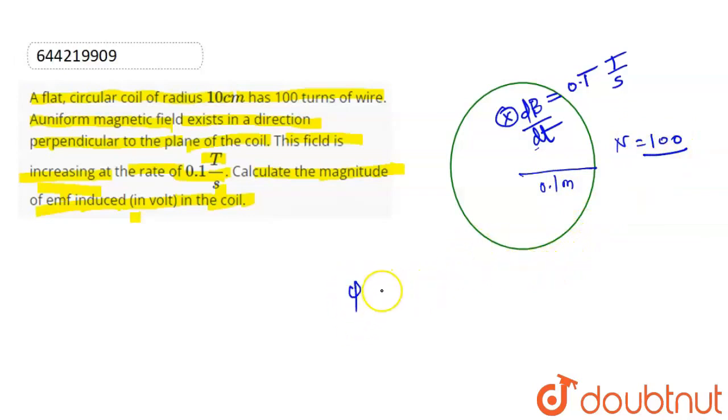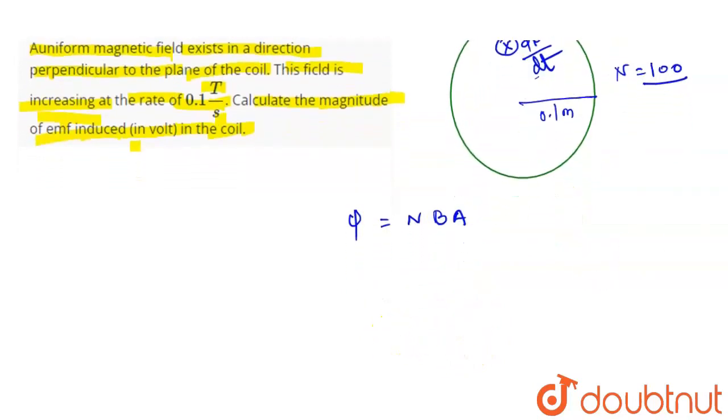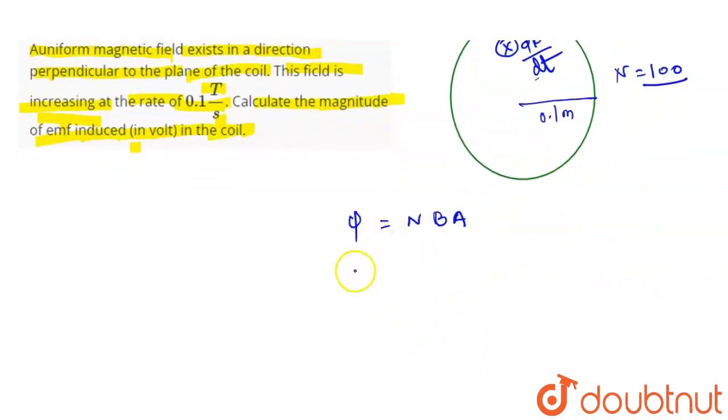We know that flux phi equals B into A. Since dB/dt is 0.1, the induced EMF equals N times dB/dt times area.